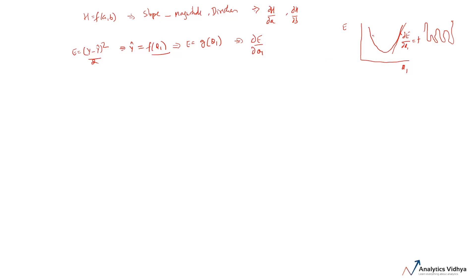Suppose you are at a point on the left side — in that case ∂e/∂theta one would be negative. So how can we use this gradient to reach the bottom? We can use an update equation: theta one = theta one minus ∂e/∂theta one. If the slope is positive, this quantity is positive, so theta one decreases overall — we move in the left direction towards the minimum.